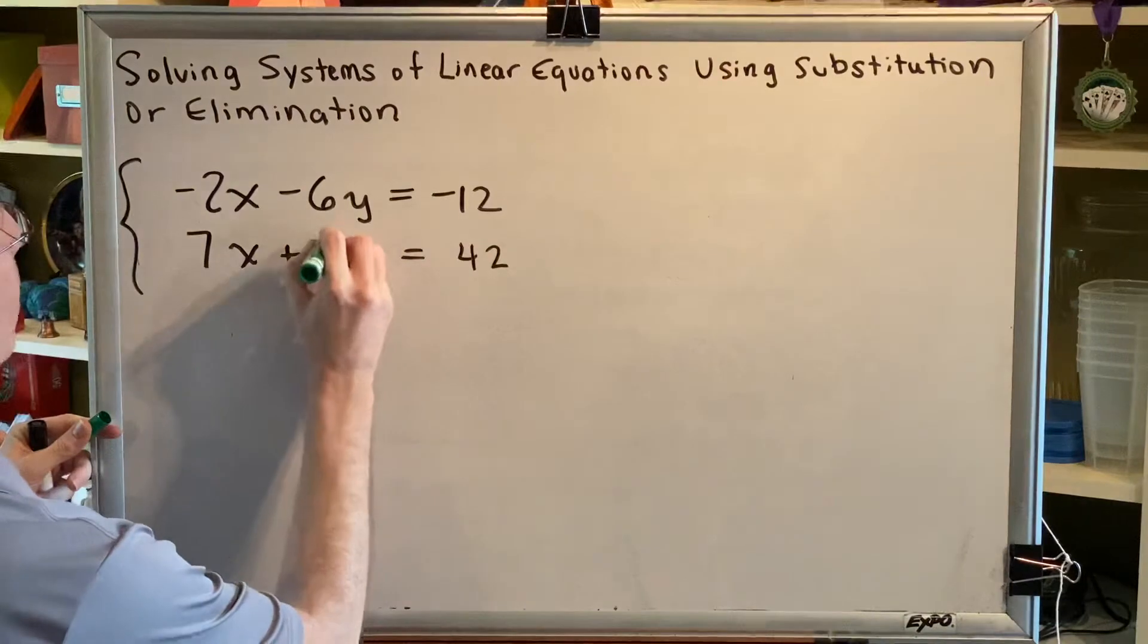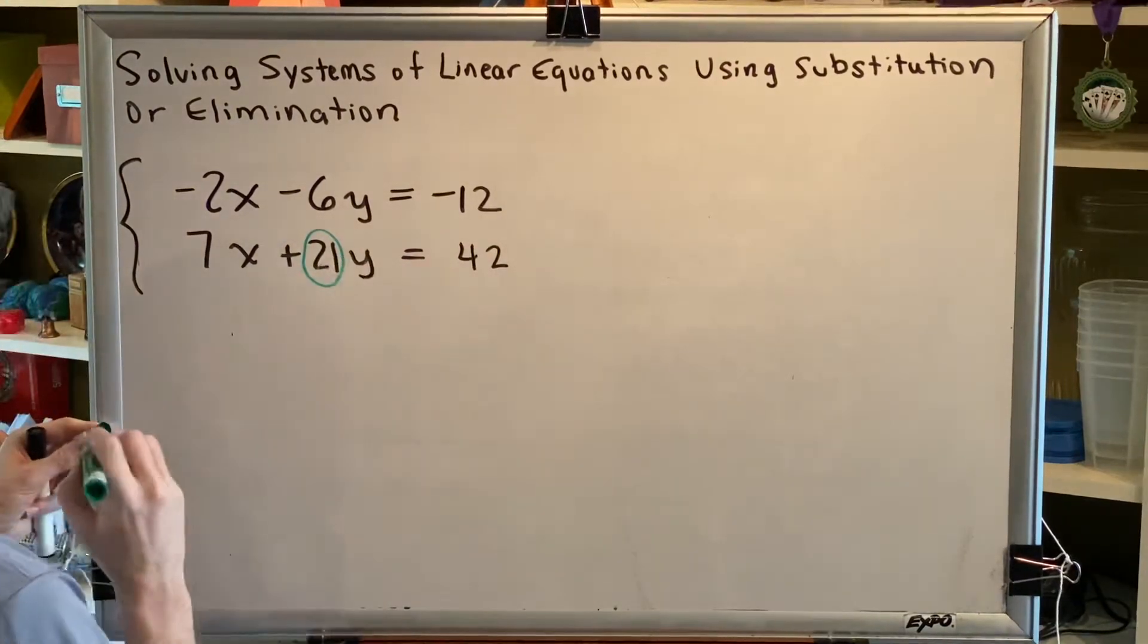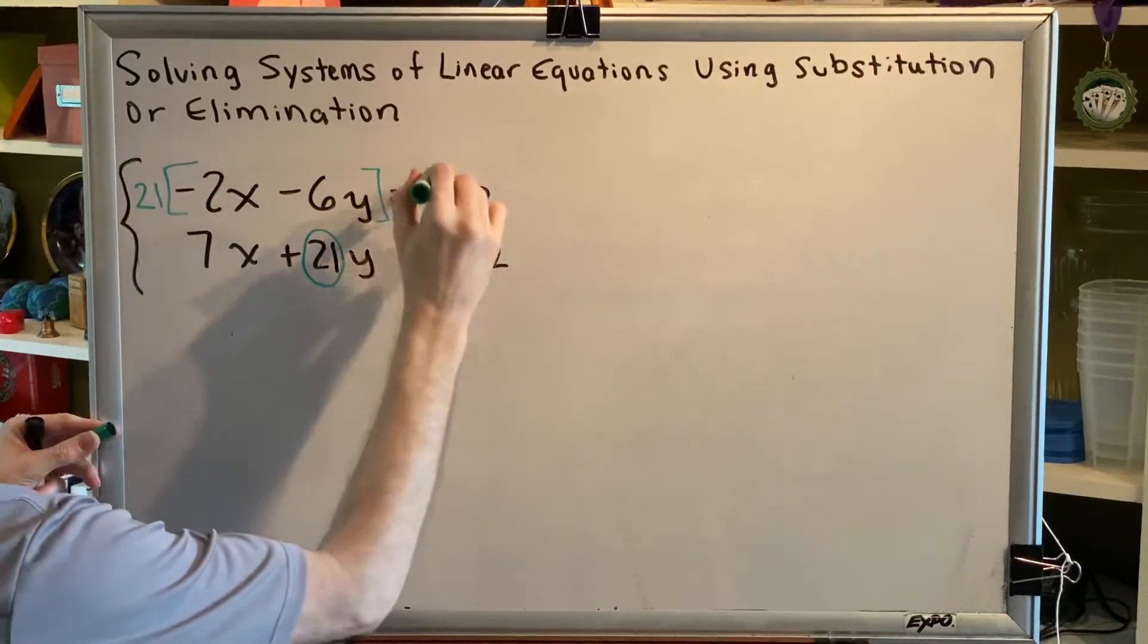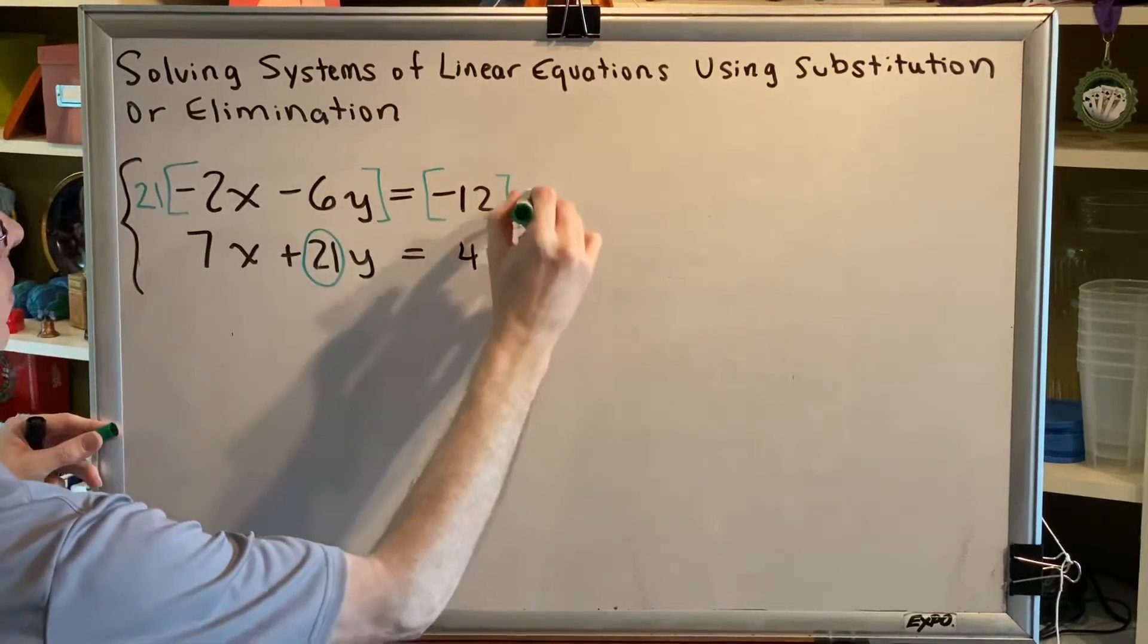Well, one way would be to take the number from the coefficient of y in the bottom equation and use that number to multiply both sides of the top equation.